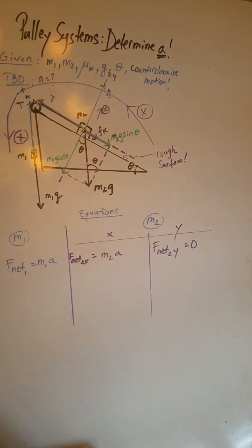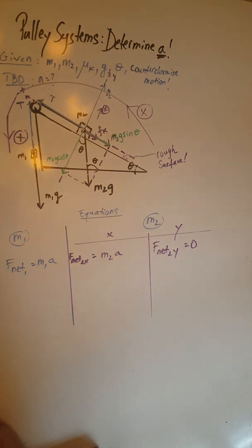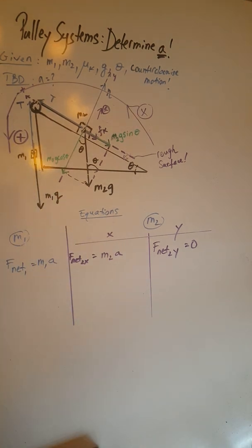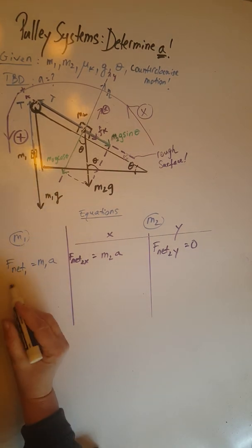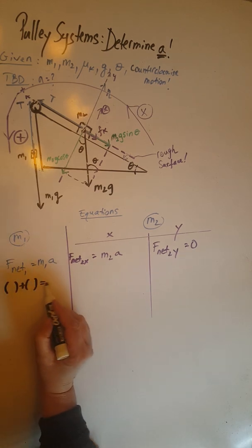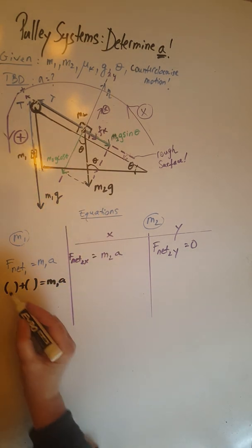In order to further develop these equations, we have to remember that F net is the vector sum of forces. Looking at m1, we have two forces that must give me m1a when I add them up.